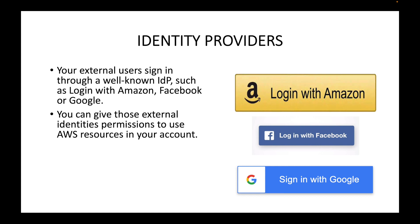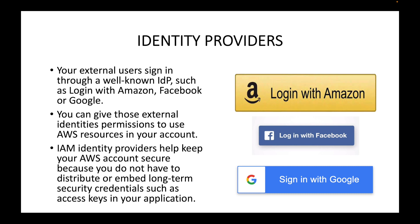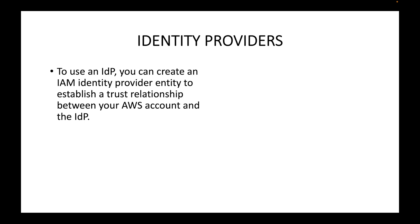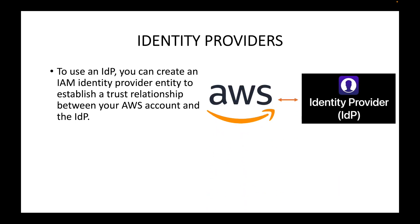You can give those external identities the necessary permissions to use the AWS resources in your account, defining exactly what those external identities can do when they log in. IAM identity providers also help keep your AWS account secure because you do not have to distribute or embed long-term security credentials such as access keys in your application. To use an IDP, you create an IAM identity provider entity to establish a trust relationship between your AWS account and the identity provider.